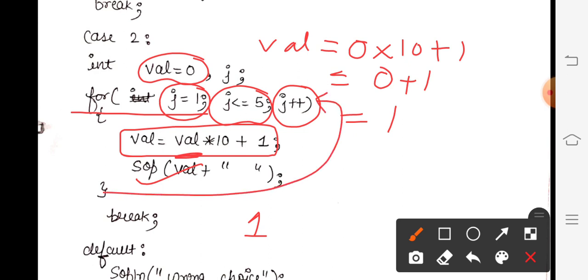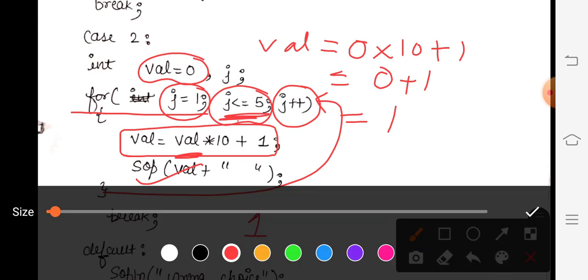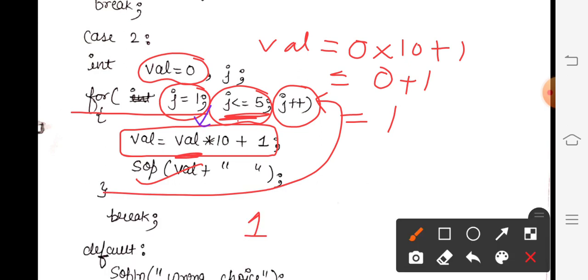After that when it will go up, j will become plus plus. Now the new value of j will be 2. Now 2 is less than 5 or not? Yes. So when 2 is less than 5, it will come back down. val = val × 10 + 1. Now what is the updated value of val? 1. So 1 × 10 + 1 = 11. That means my new value of val will be 11. So now what will print? Val ki value: 11.